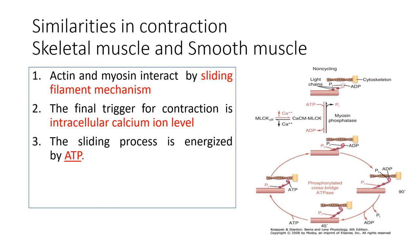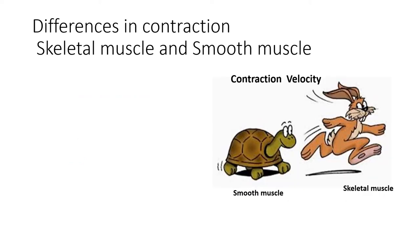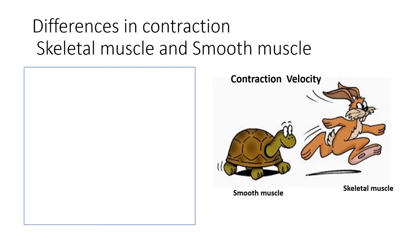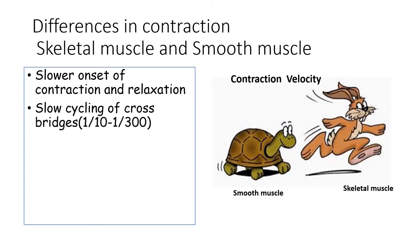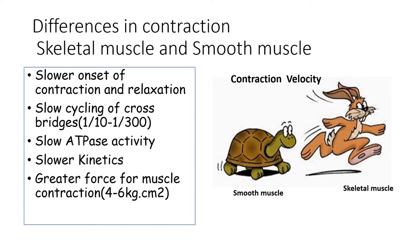The similarities between skeletal and smooth muscle contraction are that both require ATP, both require calcium, and the mechanism is the sliding filament theory. However, smooth muscles must contract for a sustained period, so there is a slower onset of contraction and relaxation, slower cross-bridge cycling, slower ATPase activity, and slower kinetics. Despite this, greater force of contraction — approximately 4 to 6 kg per centimeter squared — is generated compared to skeletal muscle, resulting in sustained contraction.